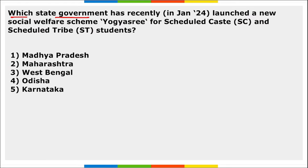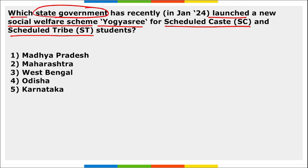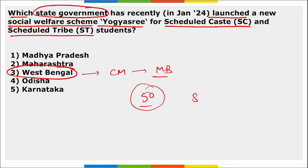Next: which state government recently launched a new social welfare scheme — 'Yogo Shree' — for Scheduled Caste and Scheduled Tribe students? It was launched by West Bengal. Chief Minister Mamata Banerjee launched Yogo Shree in Kolkata. Under this scheme, 50 centers will be opened across the state where SC and ST students can take training completely free of cost for competitive exams.